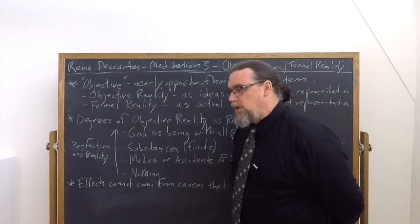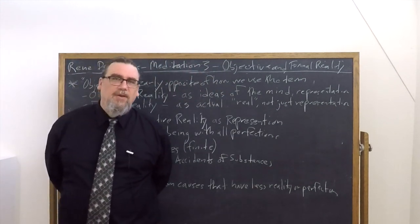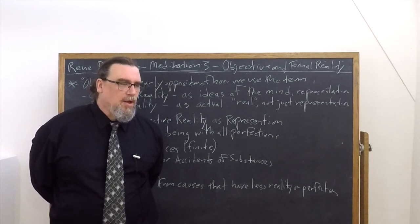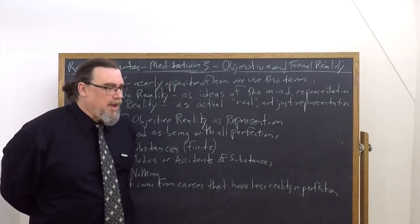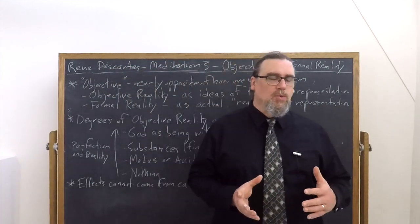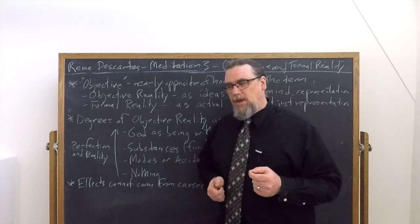In Meditation 3, Rene Descartes will make a distinction between different kinds of reality, between what he calls objective reality and several different terms: formal or actual, or sometimes he also talks about eminent reality as well.